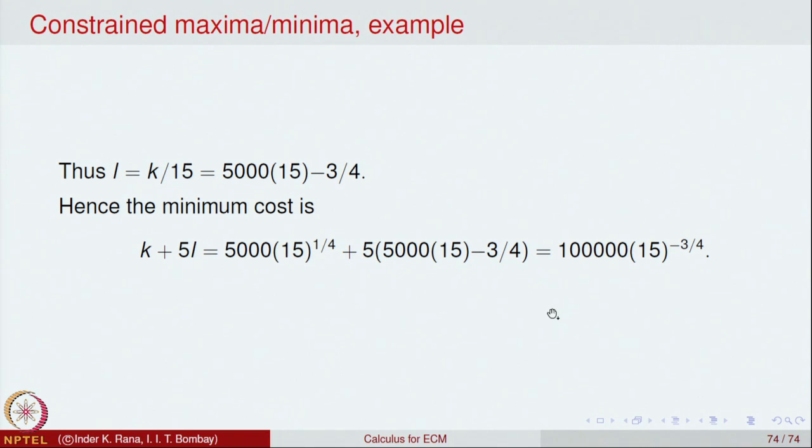This is Lagrange's method of finding absolute maxima and absolute minima. With that we conclude this course. Let us revise what we covered: we began with the real number system and its crucial completeness property — every monotonically increasing sequence bounded above must converge, and every decreasing sequence bounded below must converge.